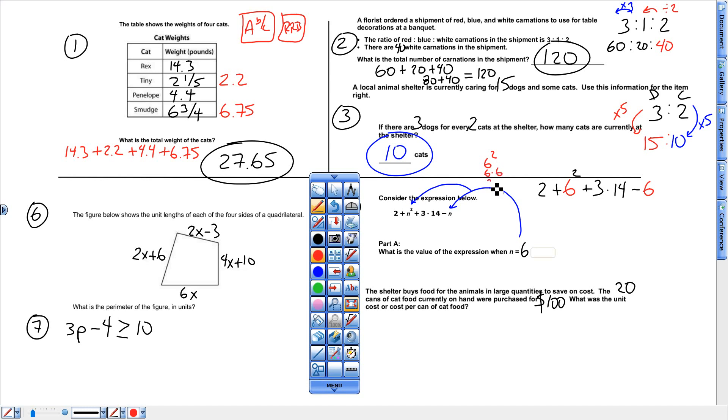6 squared is 6 times 6, which is 36. So I'm going to leave everything else alone. Leave this 2 alone. 6 times 6 is 36. Leave this 3 alone, leave this times alone, 14 alone, minus this 6. Next, times right here. 3 times 14.